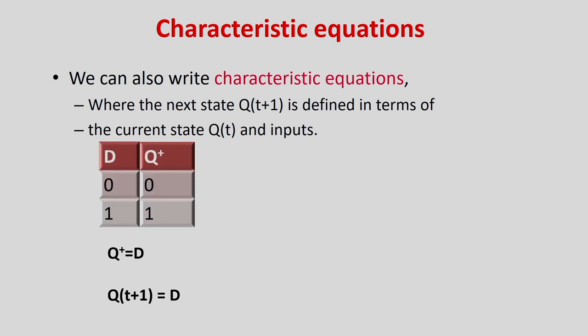Similarly, for D flip-flops — the D flip-flop is the easier one. Q-plus equals 0 if D equals 0, and Q-plus equals 1 if D equals 1. So simply Q-plus equals D. It does not depend upon the current state; whatever the value of D input, that same value gets reflected as the output.